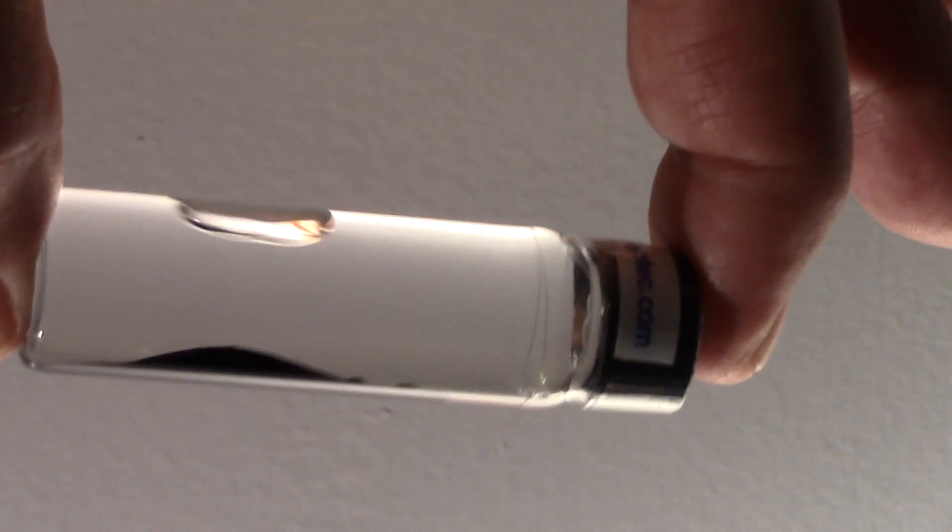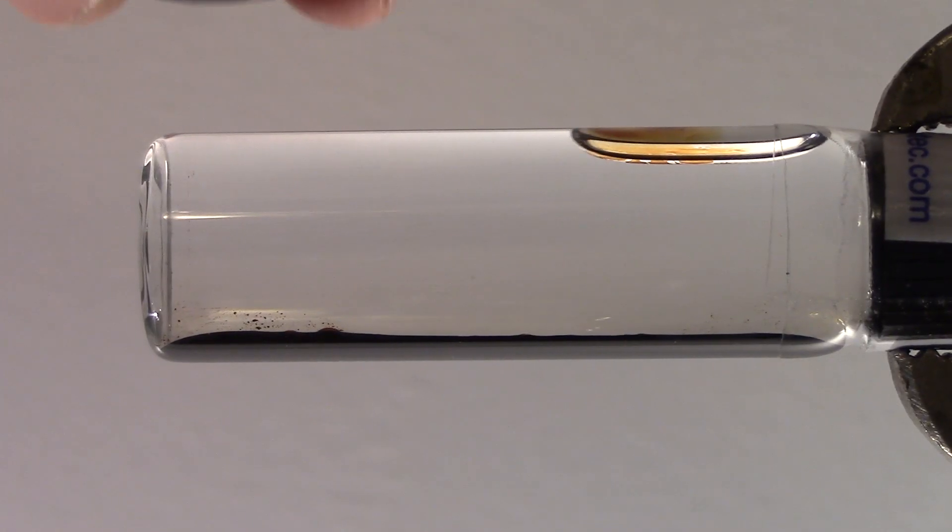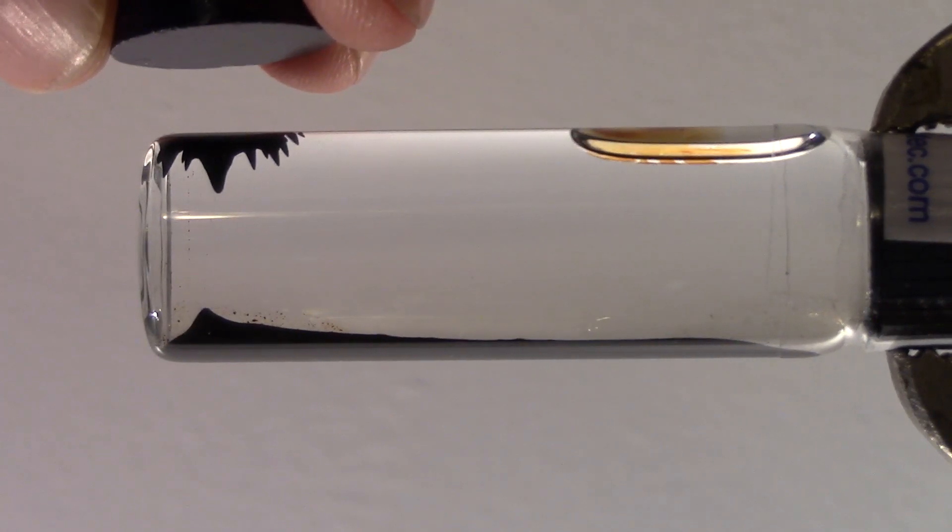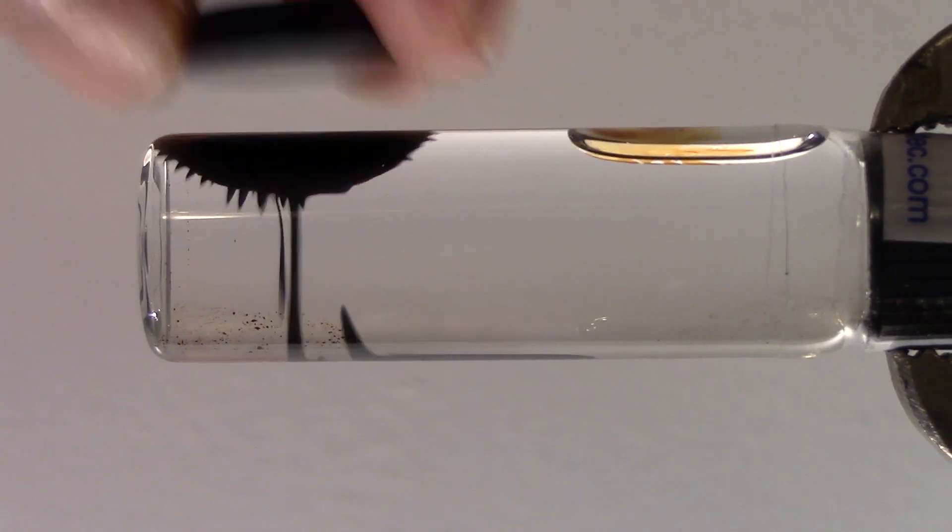You can see that the ferrofluid is indeed a fluid as it moves through the tube. Now look what happens when we put a small magnet close to the tube and take it away.